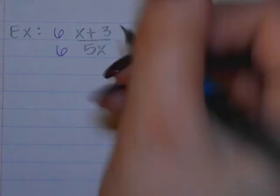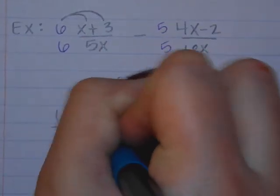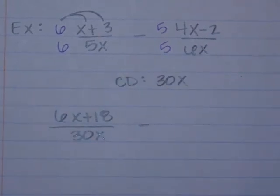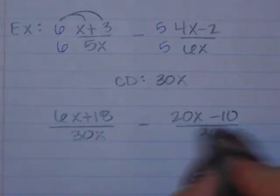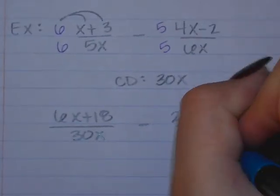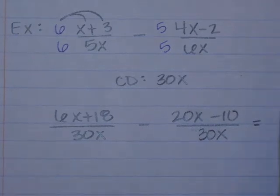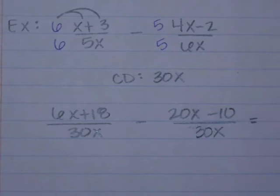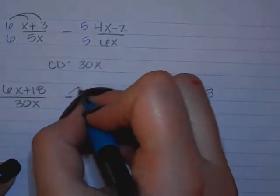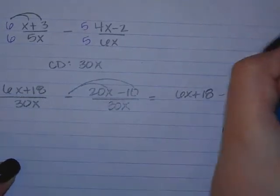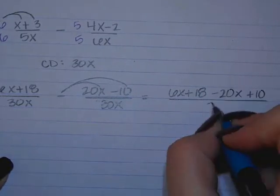For the second fraction we have 20x minus 10 over 30x. At this point we have 6x plus 18 for the first fraction. Since it's a subtraction problem, I'm going to subtract each of these — minus 20x minus negative 10. What happens when you minus negative 10? You add 10. So all of that is divided by 30x.